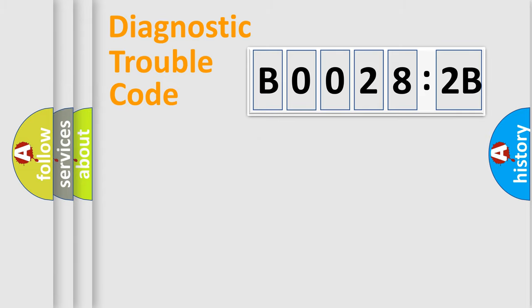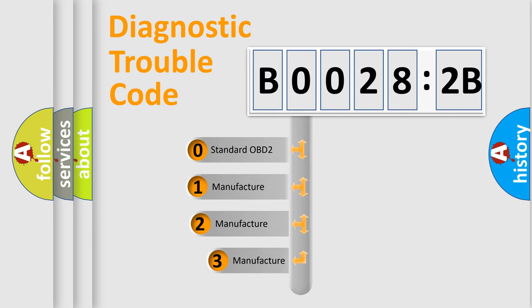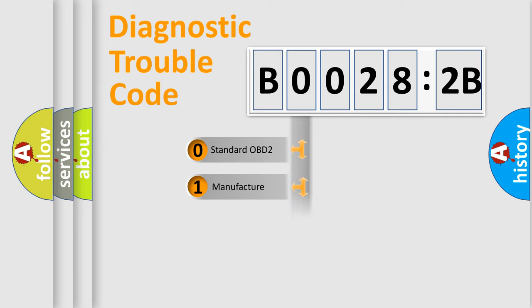The third character specifies a subset of errors. The distribution shown is valid only for the standardized DTC code. Only the last two characters define the specific fault of the group.